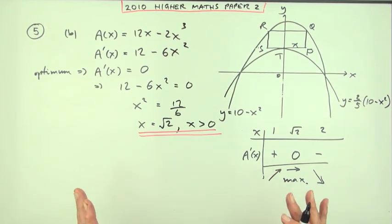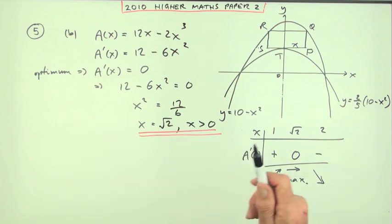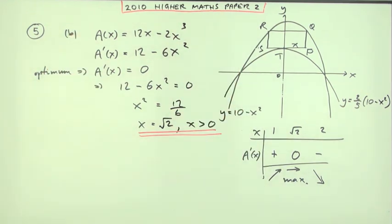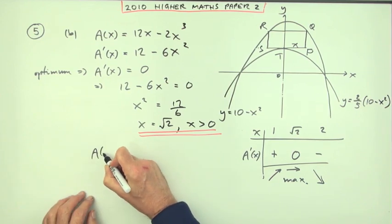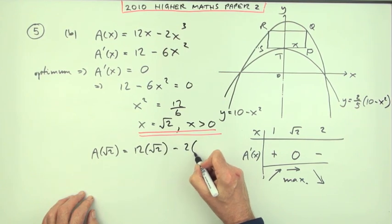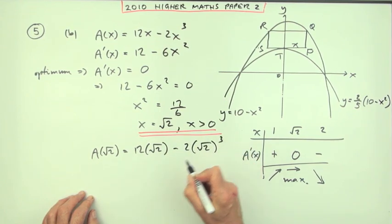Now the question didn't just say find the value of x for which the area is a maximum. It said find the maximum area. We'll just pop that back into the equation for the area. So that means the area at root 2 will be 12 times root 2 minus 2 times root 2 cubed.